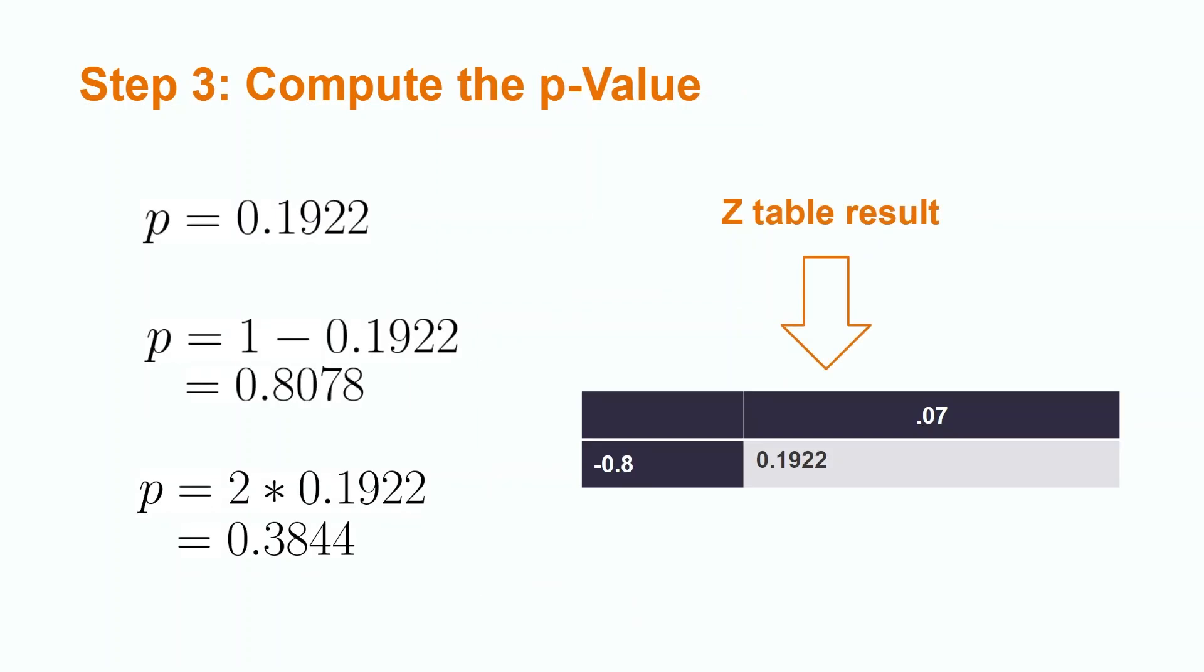Now that we have our test statistic, we can use it to compute our p-value. The p-value represents the probability of obtaining our results if the null hypothesis were true. The lower the p-value, the more extreme our results are.